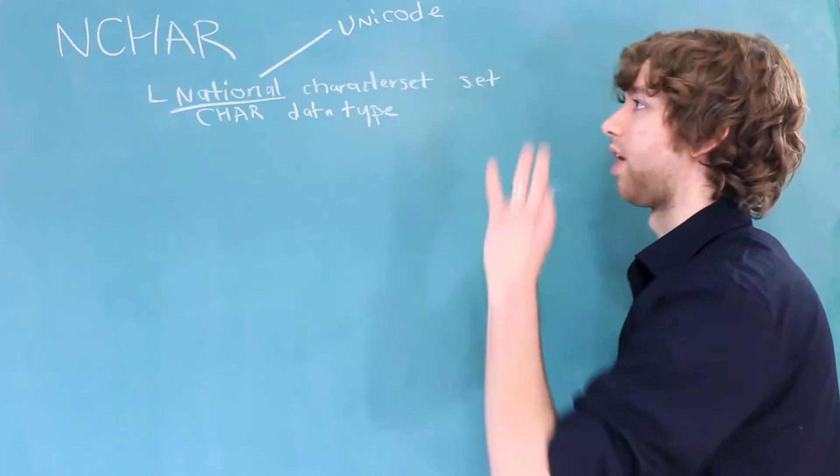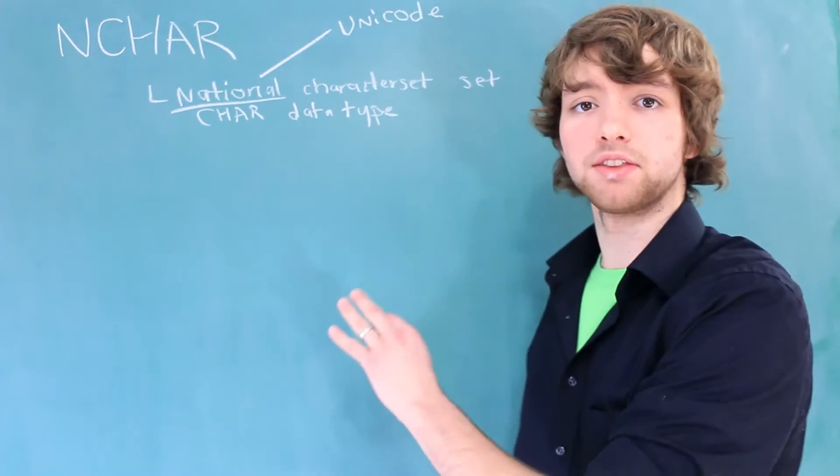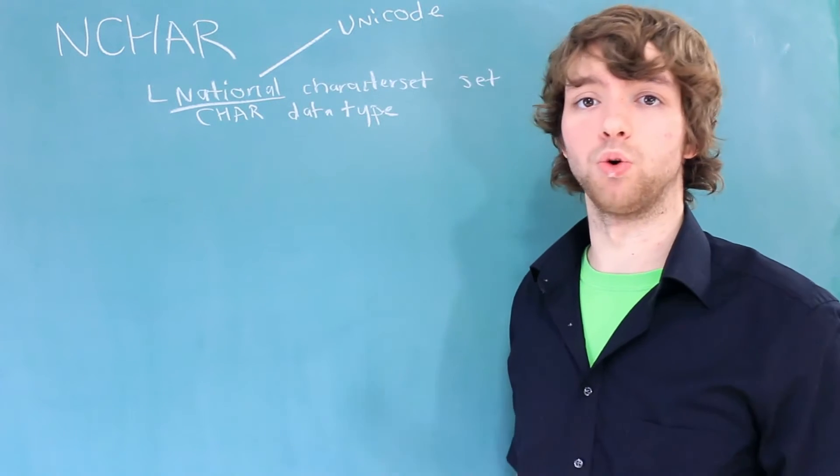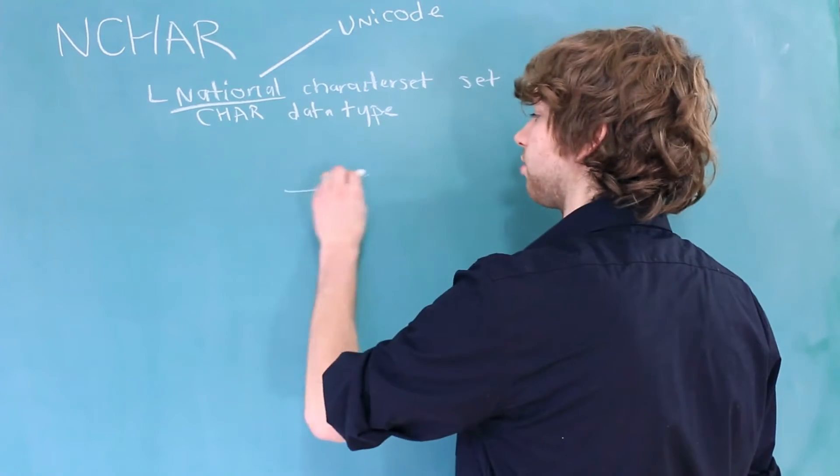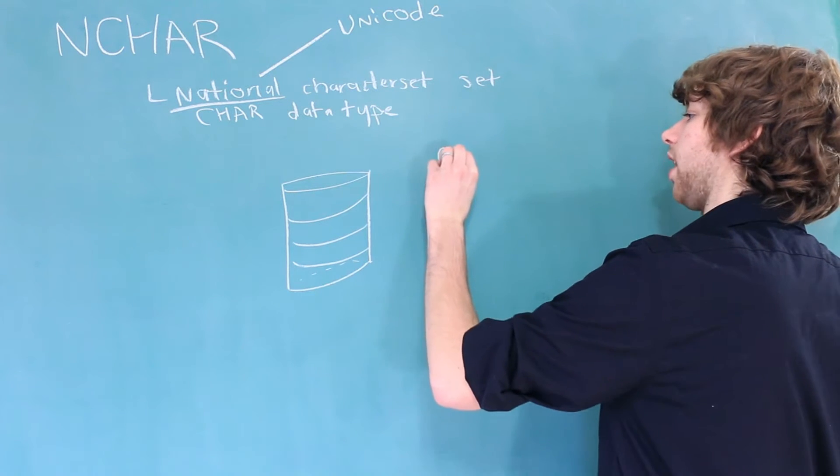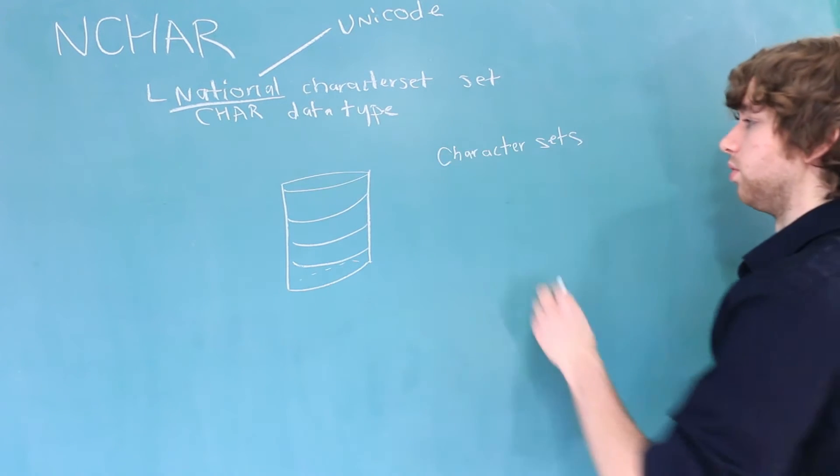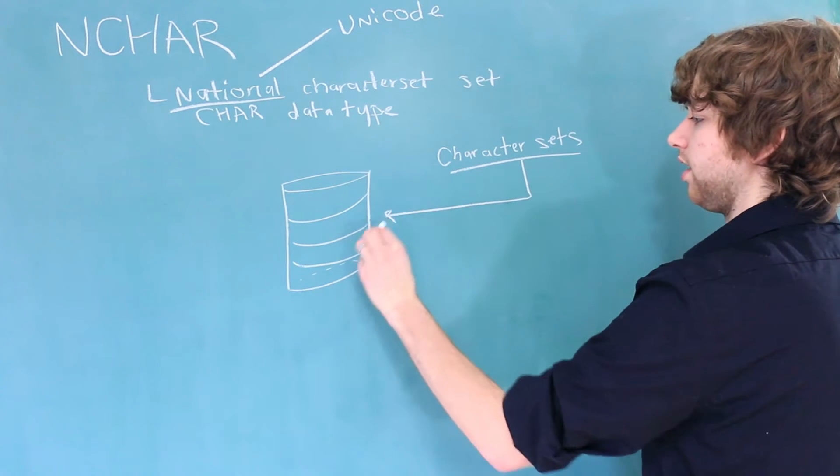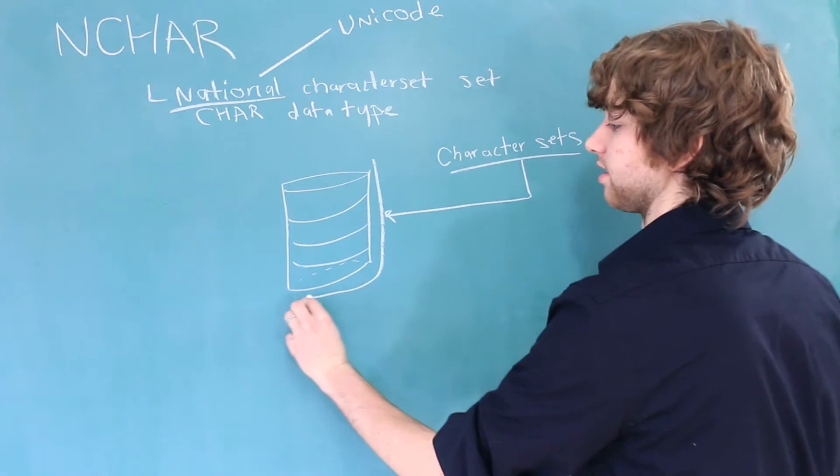Additionally, in order to understand why we would benefit from a data type like this, you need to understand how character sets are applied to an Oracle database. So let's say this is an Oracle database and we have available to us multiple character sets. The thing with Oracle is that these character sets are applied at the database level. That means the entire database gets this character set.